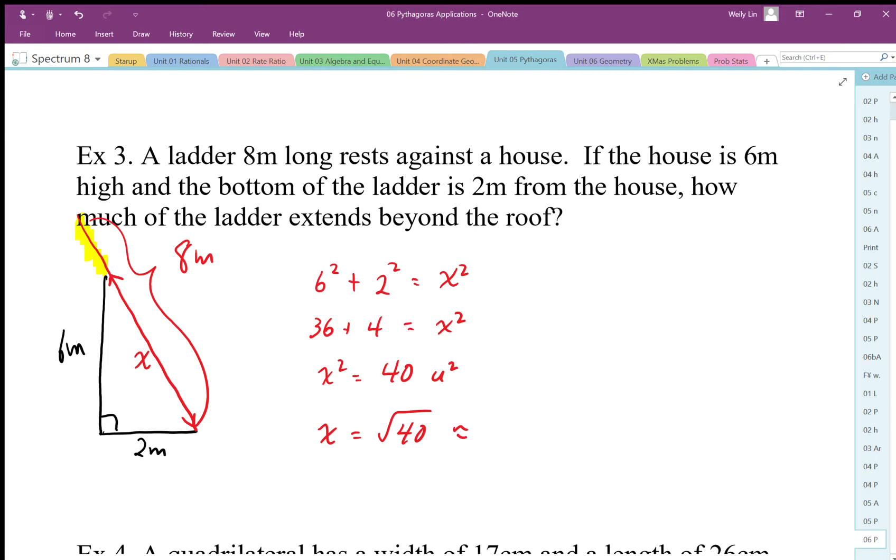So there's my side length, square root 40. So if I do 40 and square root that, I get 6.32 approximately, approximately 6.32 meters. That makes the length that I'm looking for, this piece here, the piece that extends beyond, 8 minus 6.32. It gives me 1.68 meters. So 1.68 meters extends beyond the roof.